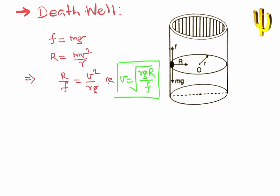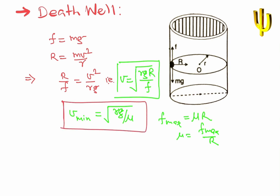So the minimum velocity of the vehicle such that the person does not fall is found when friction is maximum. v_min = √(RgR/F), and substituting F_max = μR gives v_min = √(Rg/μ). Below this minimum velocity, the vehicle will not be in a stable position and cannot complete the rotation.